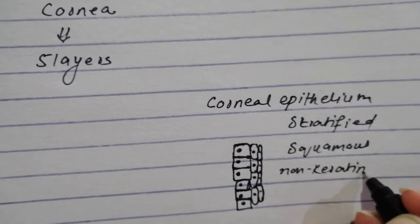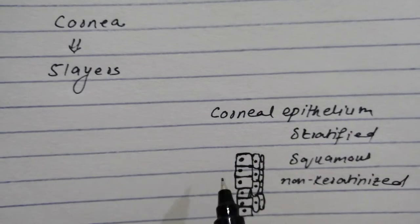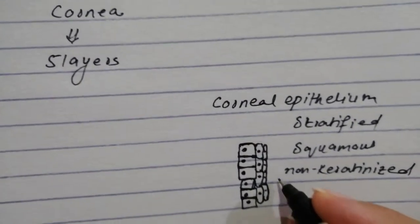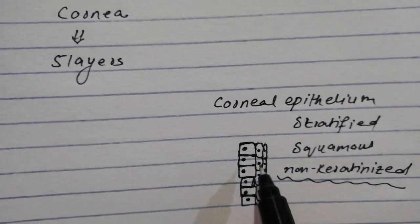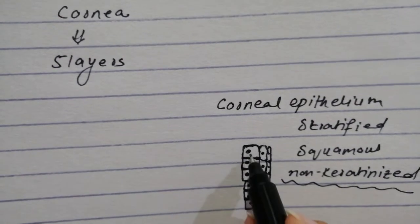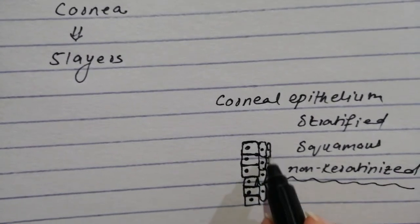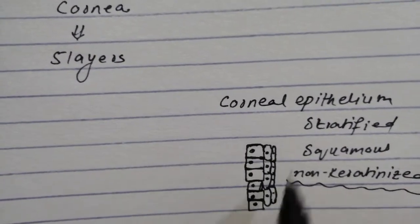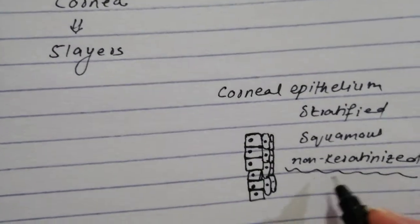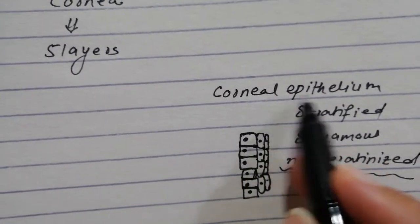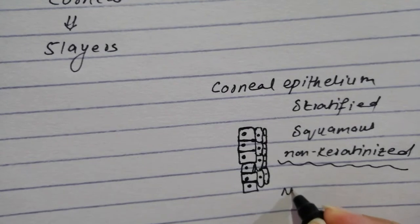You know that like any non-keratinized epithelium there is continuous proliferation of the basal cells and continuous desquamation. There are a lot of nociceptors in the corneal epithelium and that is significant.